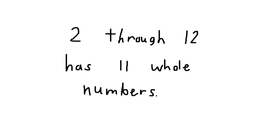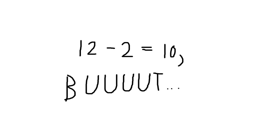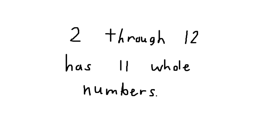Quick aside: the number of integers from 2 to 12 is 11, not 10. Taking 12 minus 2 only accounts for the jumps from one number to the next, not the actual numbers themselves. Go ahead and try counting the number of integers from 2 to 12 inclusive — it's 11.